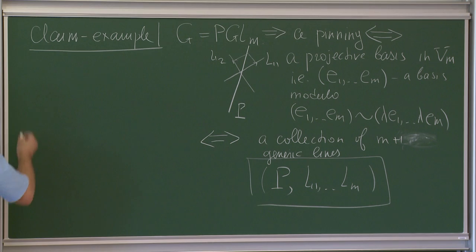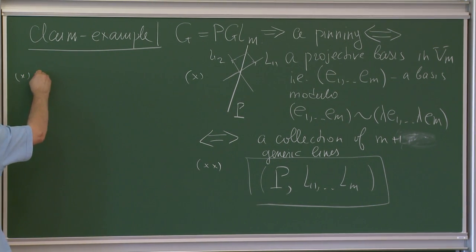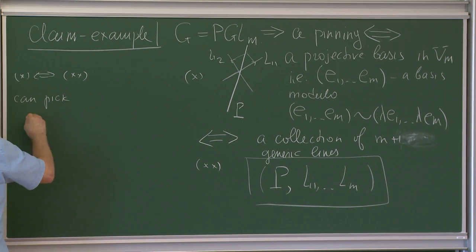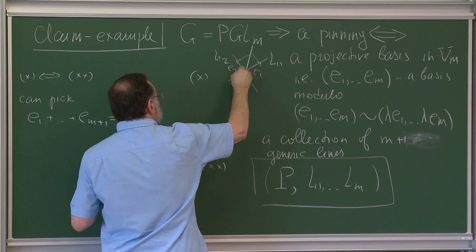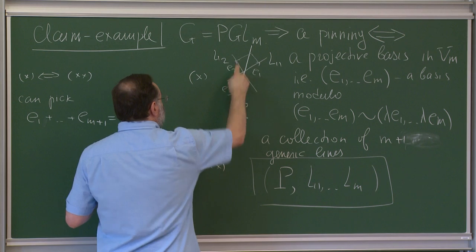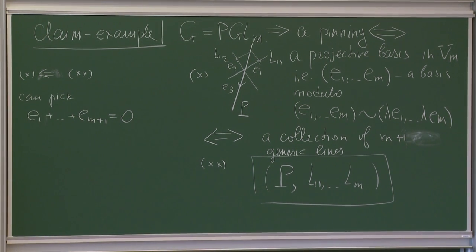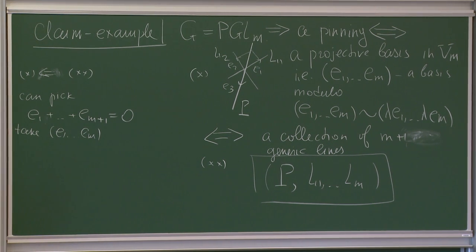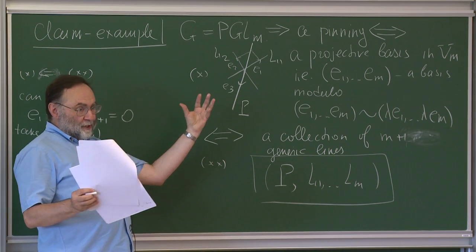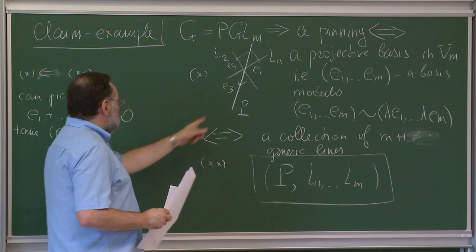Why are these two definitions equivalent? The first definition (star) is equivalent to the second (double-star) by the following observation: you can always pick M+1 vectors such that their sum is zero. Given definition two, we take these vectors and extract the first M as the basis E1, ..., EM. Conversely, given M vectors, their sum produces a line, which is EM+1 corresponding to P.